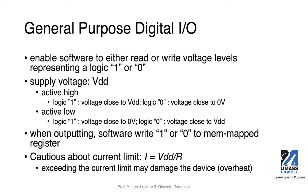Often in a timing diagram, if a signal is active low, it typically has a little bar on top of the signal name — that's an indication that it's active low. Otherwise, by default, signals are active high.